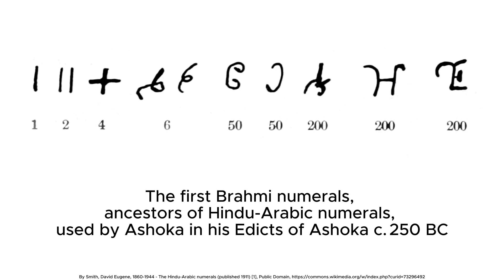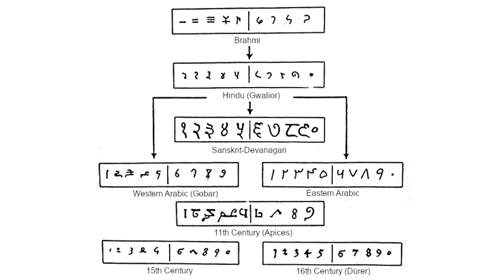It was refined by Arab scholars and eventually spread to Europe, fundamentally transforming how humanity represents numbers and performs calculations. The system began with ancient Indian mathematicians who developed the Brahmi numerals.